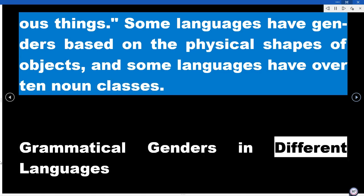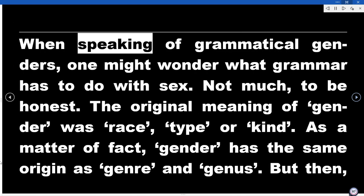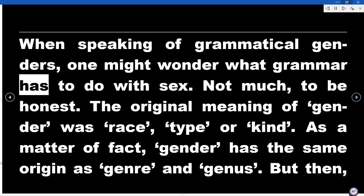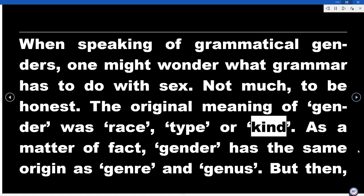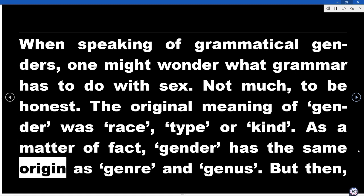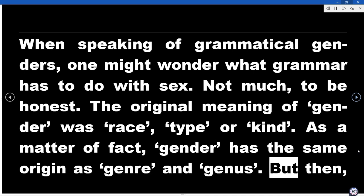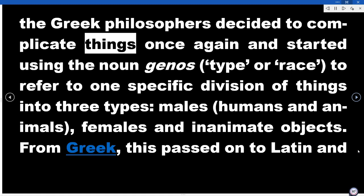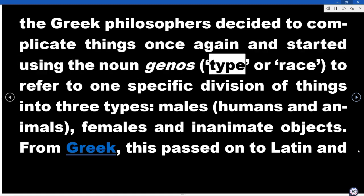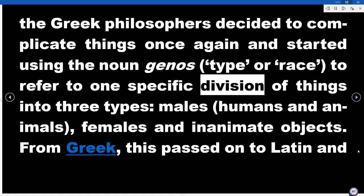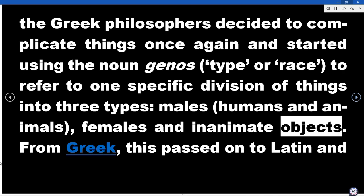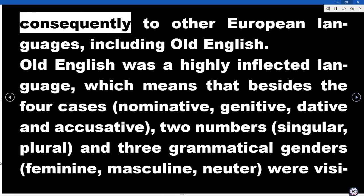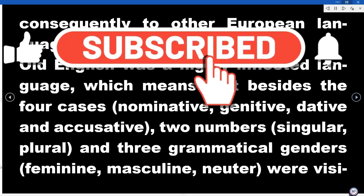When speaking of grammatical genders, one might wonder what grammar has to do with sex. Not much, to be honest. The original meaning of gender was race, type, or kind — in fact, gender has the same origin as genre and genus. The Greek philosophers started using the noun genus — type or race — to refer to one specific division of things into three types: males (humans and animals), females, and inanimate objects. From Greek, this passed on to Latin and consequently to other European languages, including Old English.